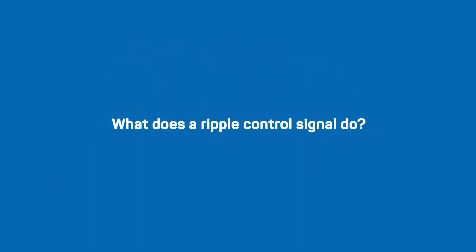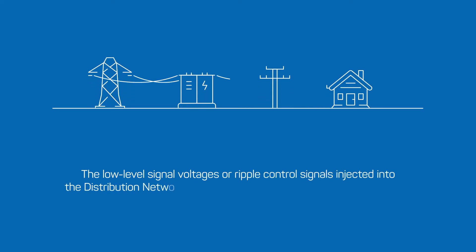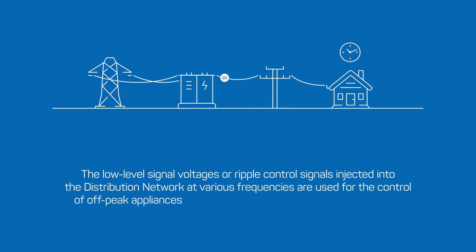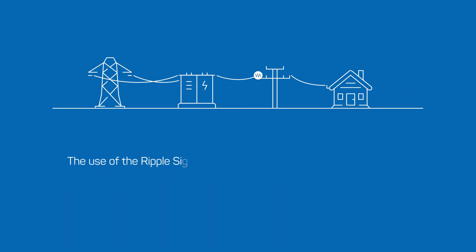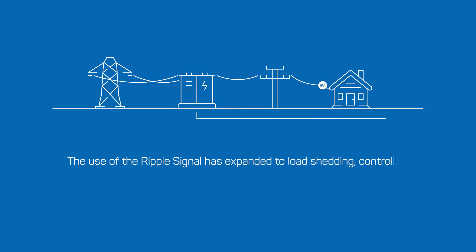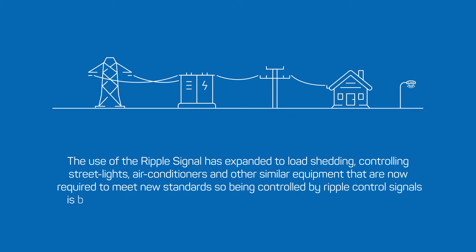The low-level signal voltages or ripple control signals injected into the distribution network at various frequencies are used for the control of off-peak appliances mainly. The signals are commonly and initially used to switch the metering for hot water and heating systems. The use of the ripple signal has expanded to load shedding, controlling street lights, air conditioners and other similar equipment that are now required to meet new standards, so being controlled by ripple control signals is becoming more popular.